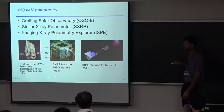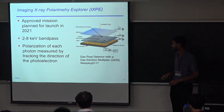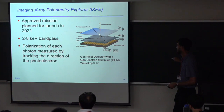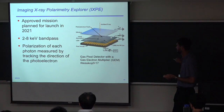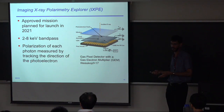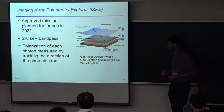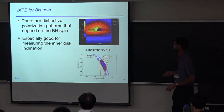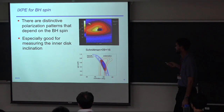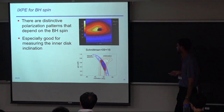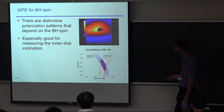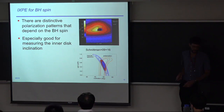IXPE is a photoelectric polarimeter. The X-ray comes in, kicks out a photoelectron, and the instrument tracks the photoelectron to determine the polarization direction. The bandpass is 2 to 8 keV — soft X-rays that cover the iron line and the thermal component. It's very good at measuring the inclination of the disk. Calculations show that IXPE would constrain the inclination of the accretion disk very well, and from there you can do a great job measuring the black hole spin.